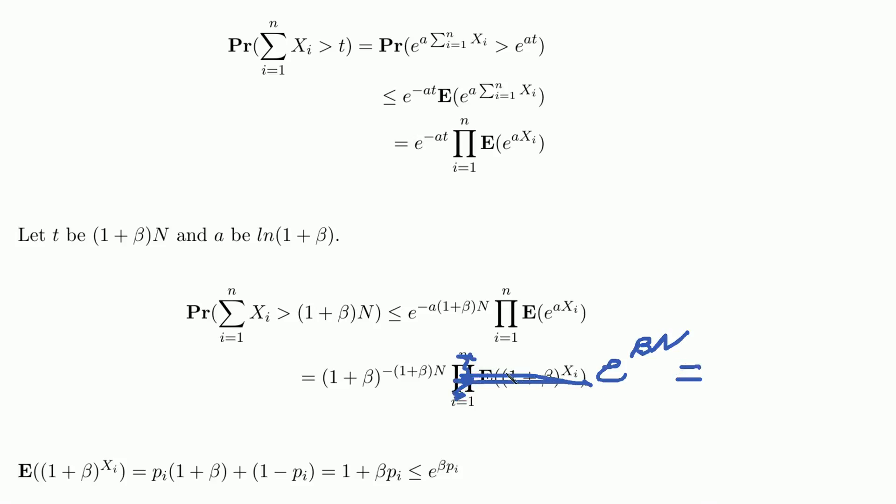And now we see this here will turn to this: beta times n, 1 plus beta to the power of 1 plus beta times n. And this is exactly what we wanted to prove.